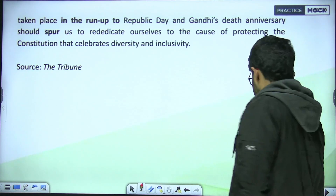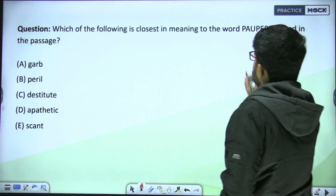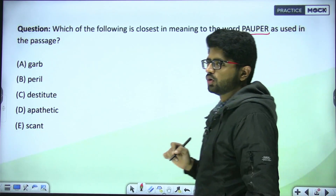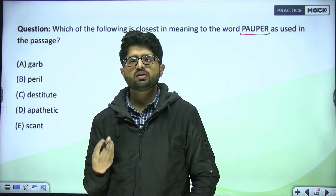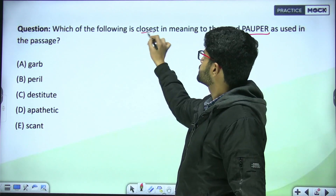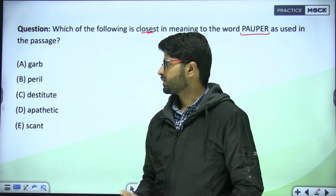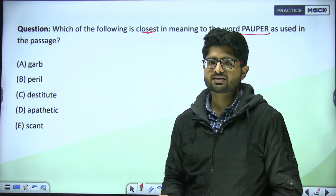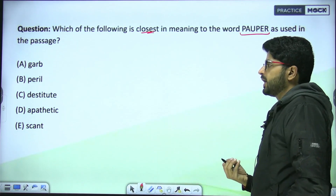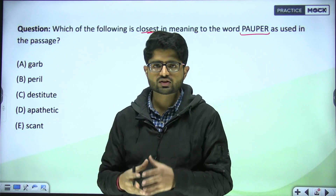A word is mentioned in the passage. We will find the closest meaning to the word 'popper'. The options are: God, Peril, Destitute, and Apathetic and Scant. Mark your answer and then we will discuss it in the passage.